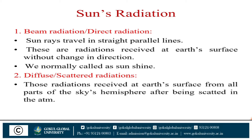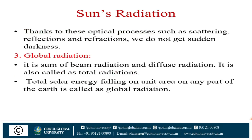Diffuse radiation refers to radiation received at the Earth's surface from all parts of the sky hemisphere after being scattered in the atmosphere. Third definition: global radiation. It is the sum of beam radiation and diffuse radiation, also called total solar radiation. Total solar energy falling on a unit area on any part of the Earth is called global radiation.